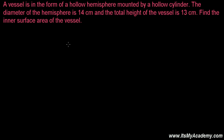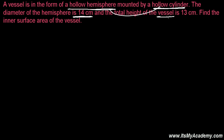Here I'm going to discuss another interesting question from the surface areas of combination of solids. I'm going to combine a hemisphere with a cylinder. A vessel is in the form of a hollow hemisphere mounted by a hollow cylinder. The diameter of the hemisphere is 14 centimeters, and the total height of the vessel is 13 centimeters. Find the inner surface area of the vessel.